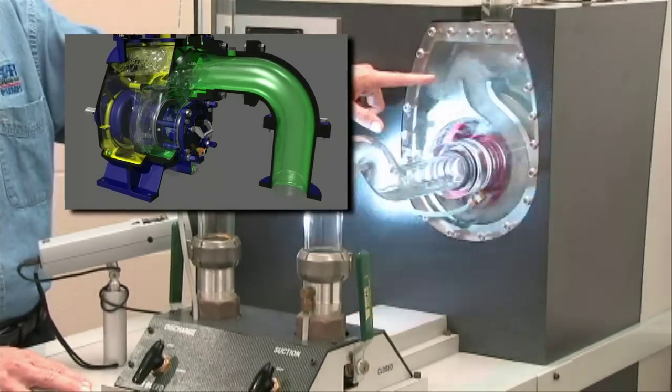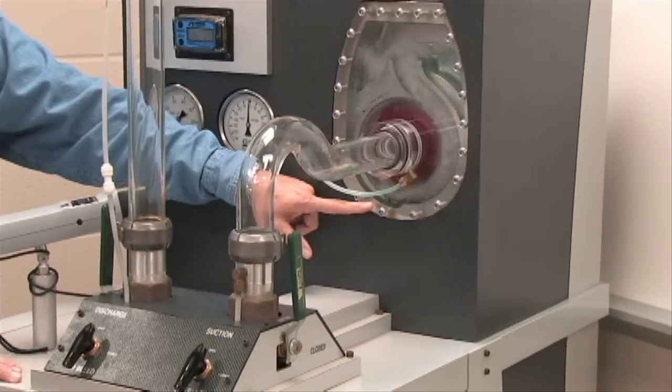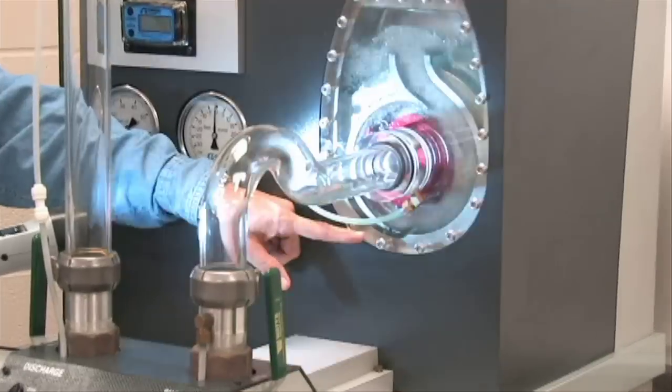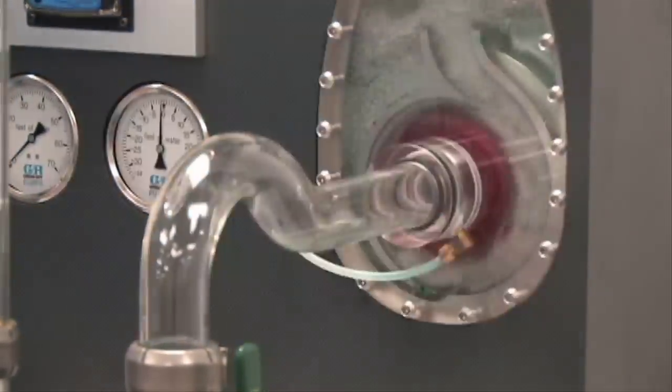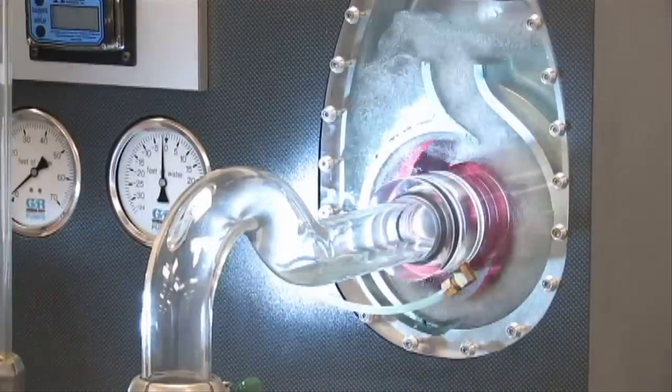Again, the air is handled off the top and the heavy water recirculates back down into the volute scroll area. I'll close this valve right now and create a suction line capable of pulling a vacuum.